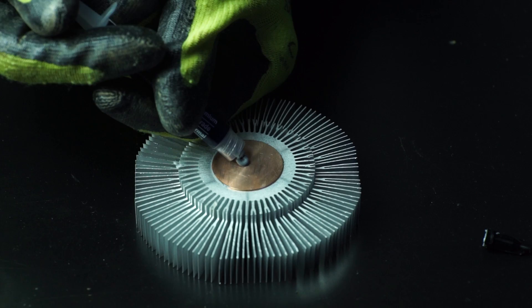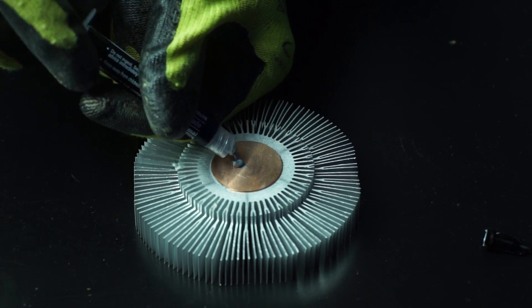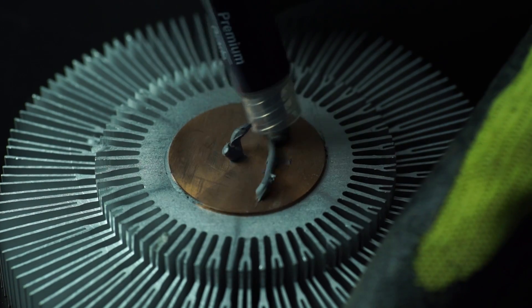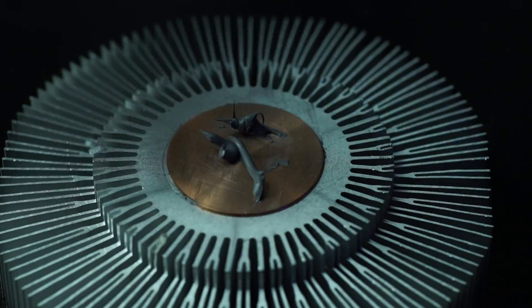Start by squeezing some thermal compound on the backside of the heat sink. Use something flat to spread it evenly.